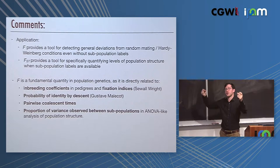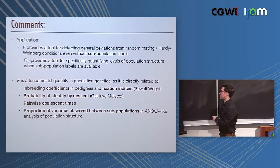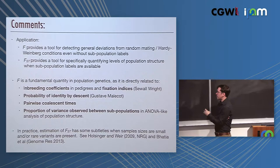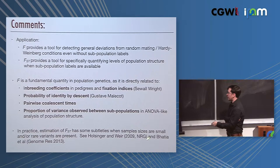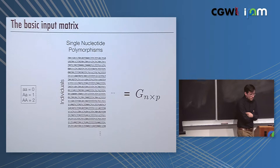It's a fundamental quantity in population genetics. It's directly related to inbreeding coefficients and pedigrees, to the broader theory of fixation indices that Sewall Wright worked out, to probabilities of identity by descent, to pairwise coalescent times which are how long we have to go back to find a common ancestor, and also to the proportion of variants observed between subpopulations when you do an ANOVA-like analysis with population structure. In practice when you estimate FST, there are some subtleties, especially when sample sizes are small and rare variants are present. I want to keep us moving along, so I'm going to talk about admixture proportion inference now.